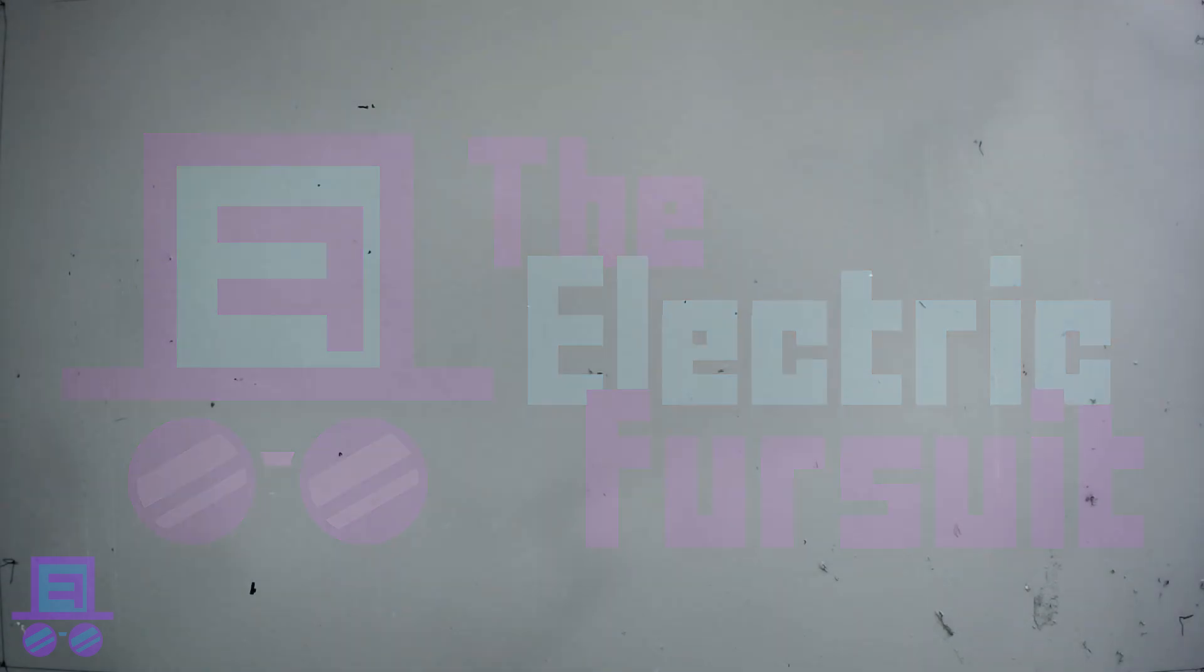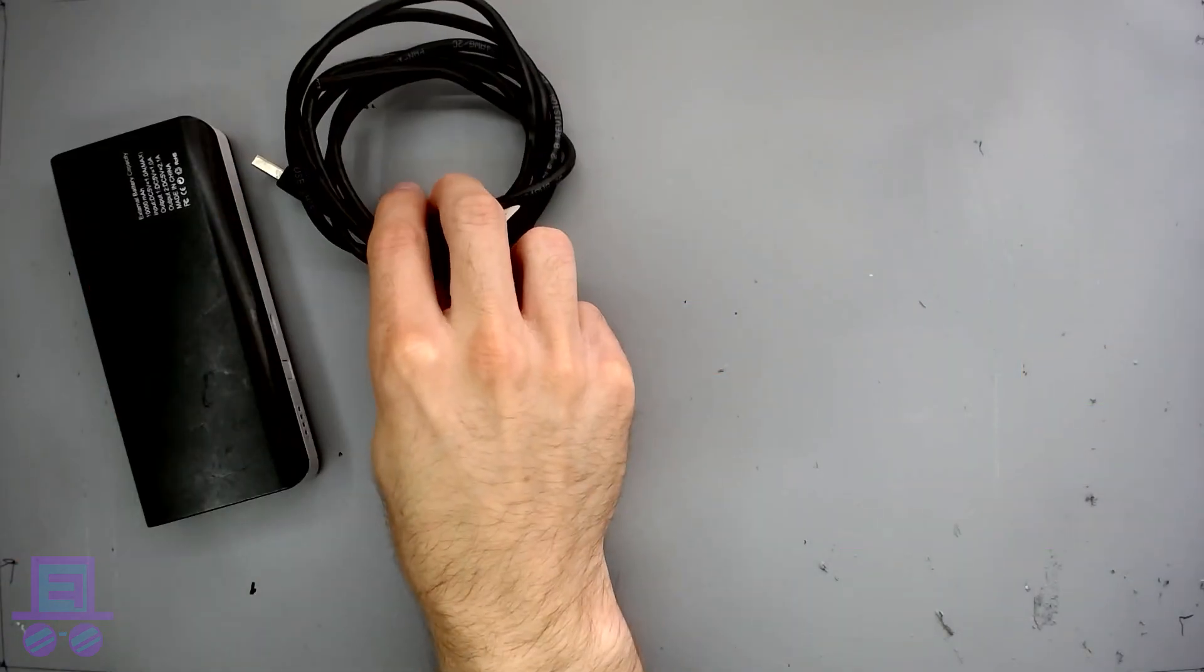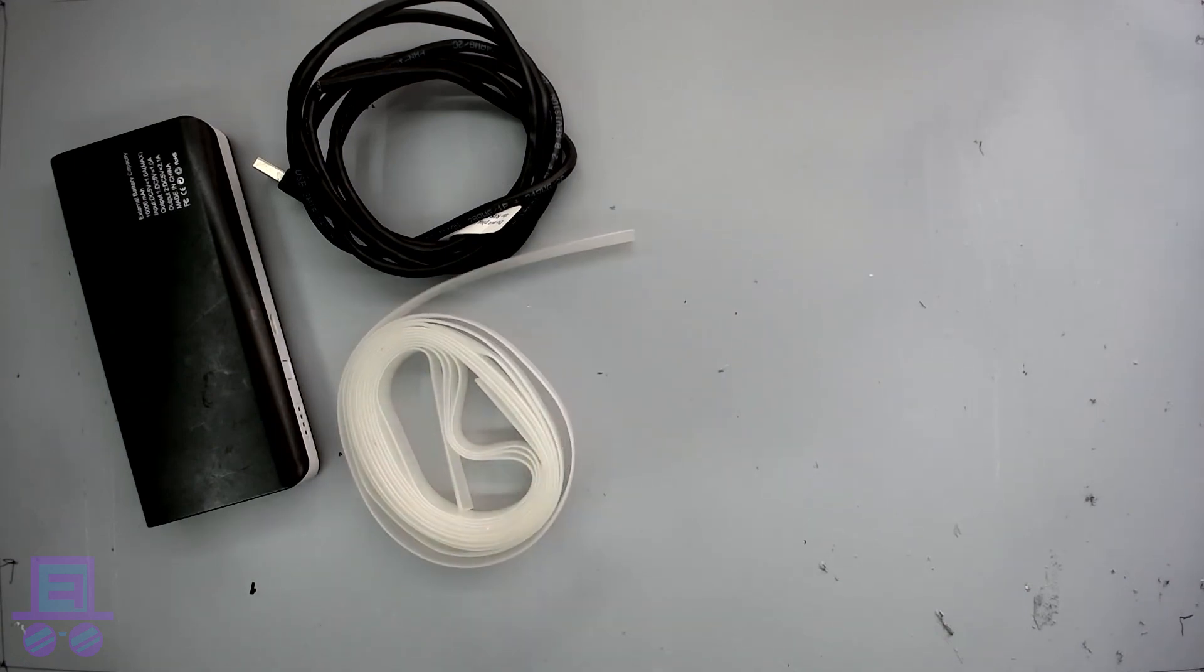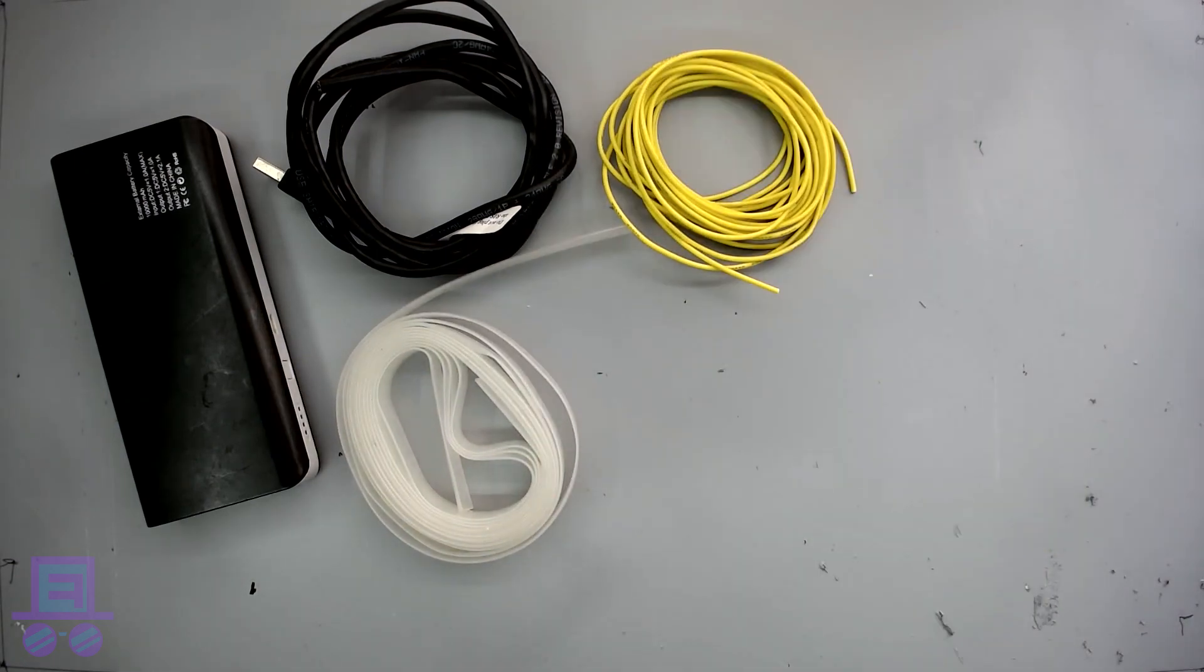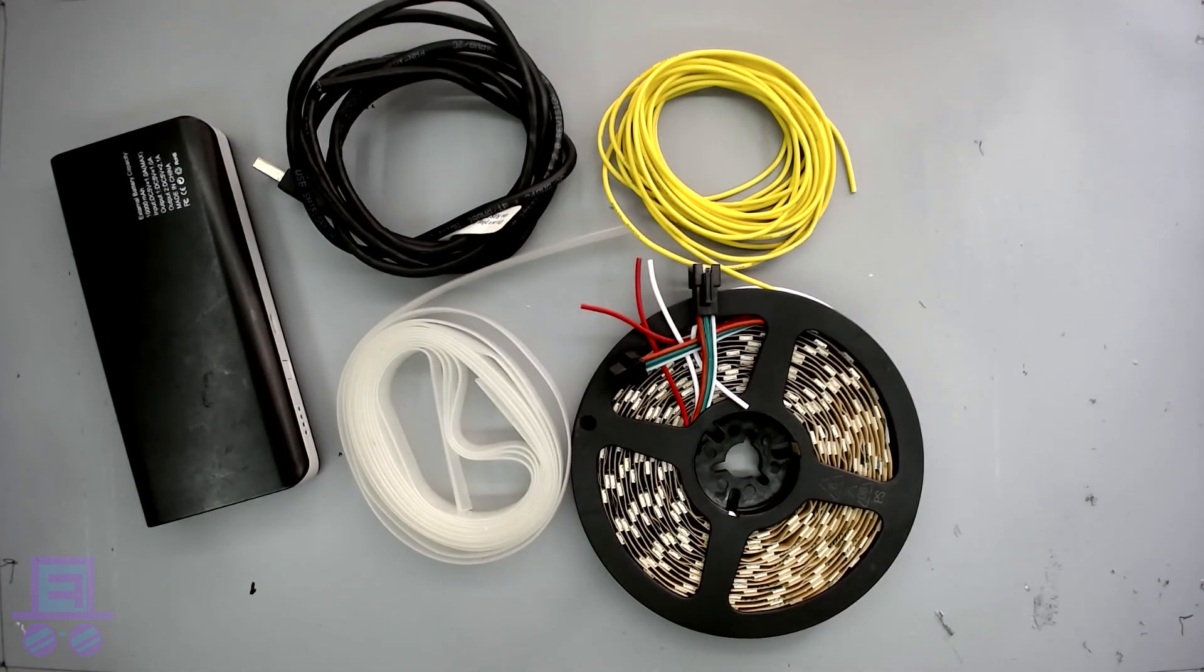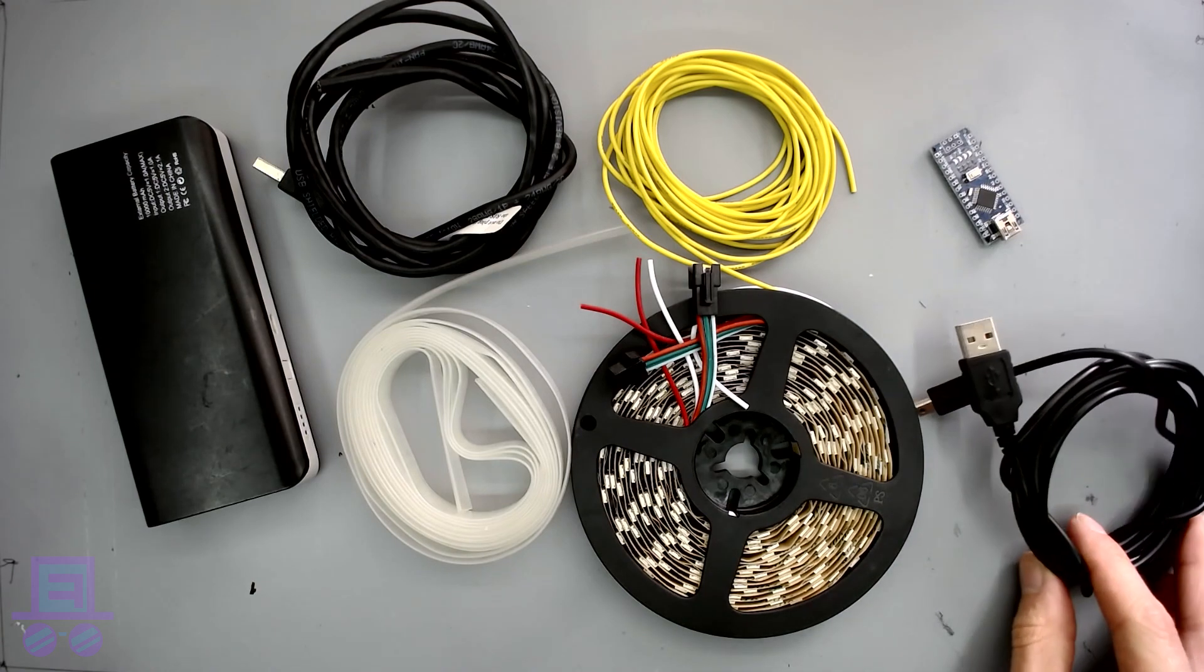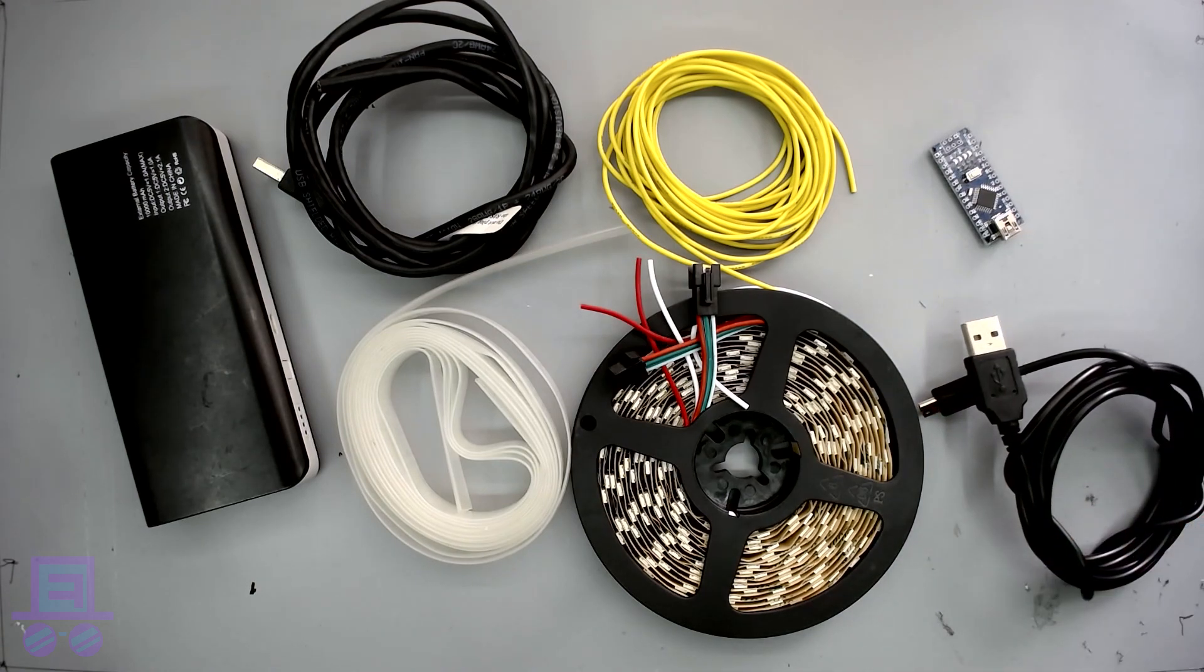In today's episode, we will need a portable USB battery pack, an old charging cable that we can hack up, some clear 10mm heat shrink tubing, some wire, a WS2812B LED strip, an Arduino Nano, and a mini USB cable to connect our Arduino to our PC.